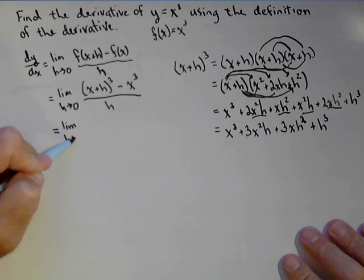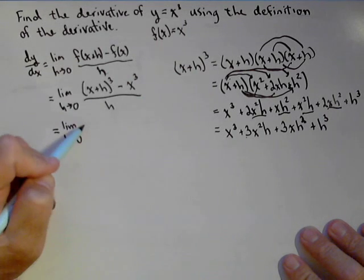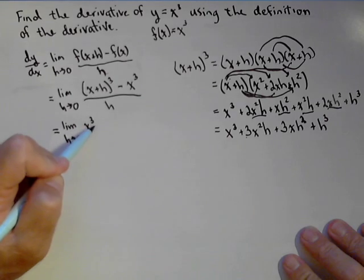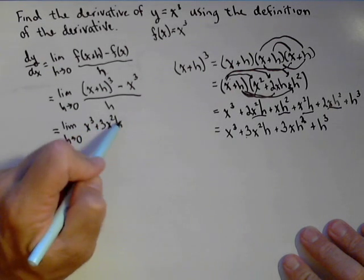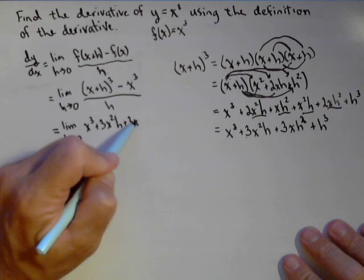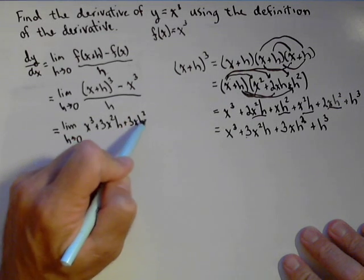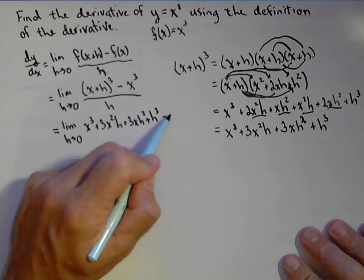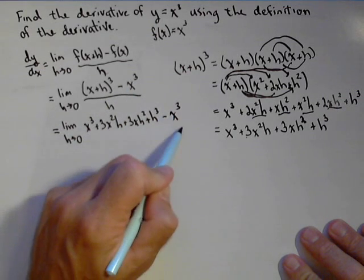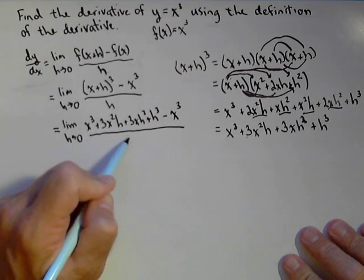So we have the limit as h goes to zero of x cubed plus three x squared h plus three xh squared plus h cubed. And then finally, don't forget the minus x cubed. That's actually very important.